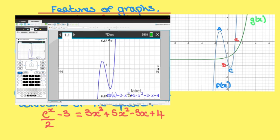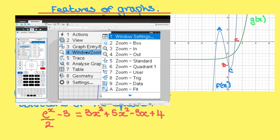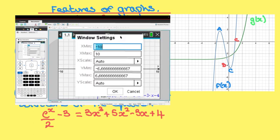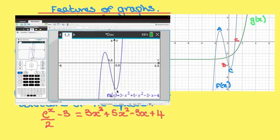I'm now going to change the window to the exact specifications given in the diagram. So press menu, window zoom, window settings. I want the x values to go from -8 to just past 6, so go to 6.5. I want the y values to go from -6 to 4, and there is our graph.